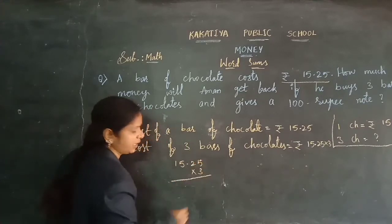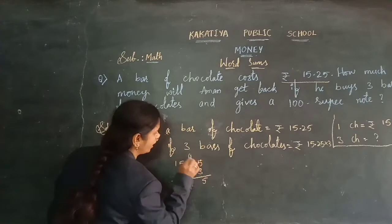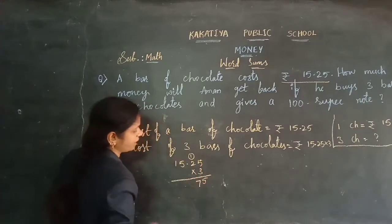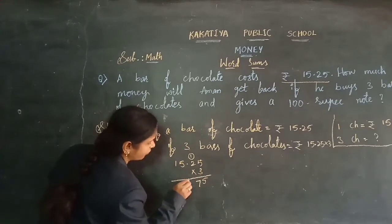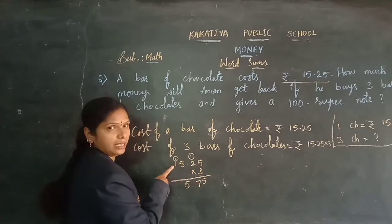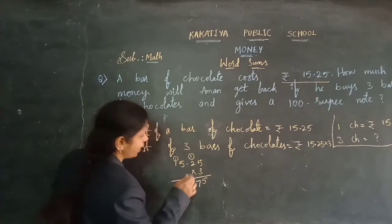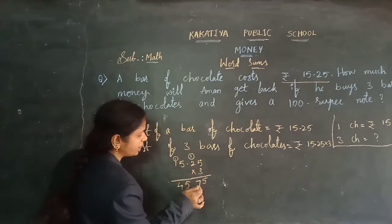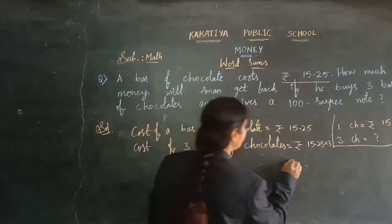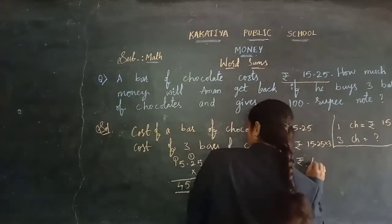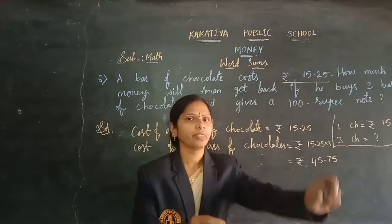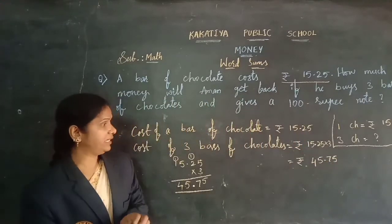15 rupees 25 paise into 3: 3 fives are 15, write 5 carry 1. 3 twos are 6, plus 1 is 7. Now 3 fives are 15, write 5 carry 1. 3 ones are 3, plus 1 is 4. And here 2 digits before the point, so here also 2 digits before the point — keep the point. We found the 3 chocolates cost: 45 rupees 75 paise.